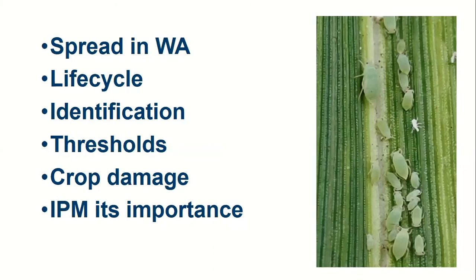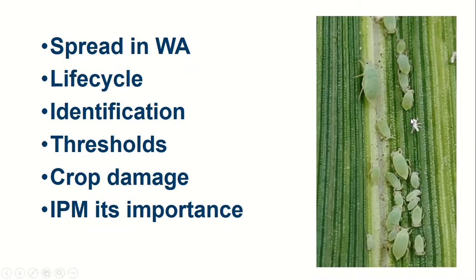I will be going through the life cycle, identification thresholds that have been developed by SARDI, and the crop damage and why we really need to be looking at IPM. On the right hand side here you can see these little white bits. A lot of agronomists keep asking me what they are — they're just the cast skins of aphid nymphs. Every time a nymph goes through a moult it actually leaves a cast skin, so it's not actually a dead aphid. Most of the photos in this talk were taken from Esperance.